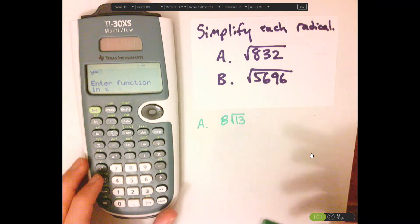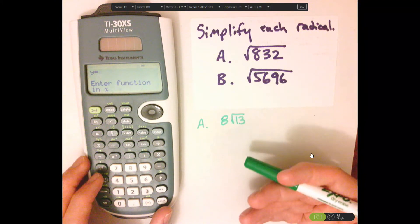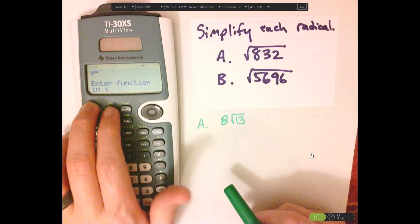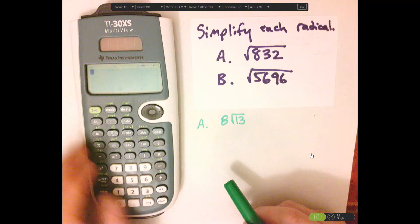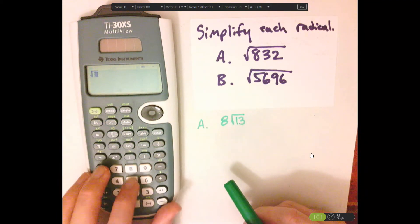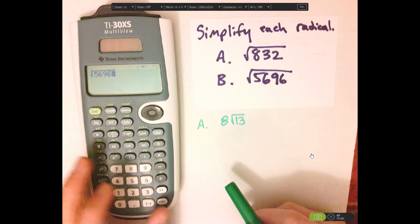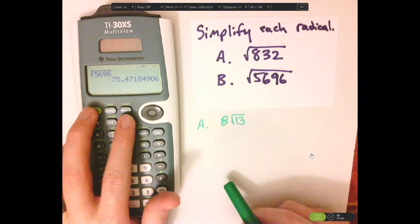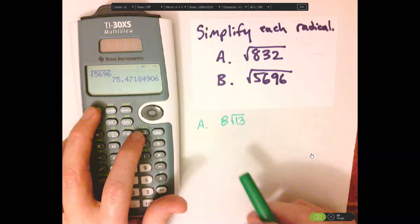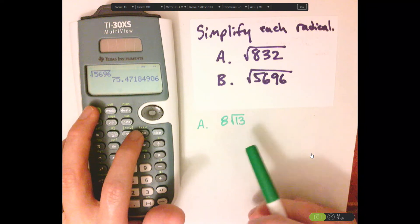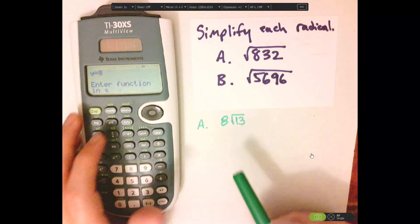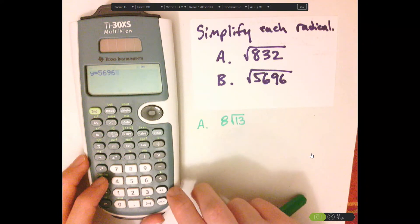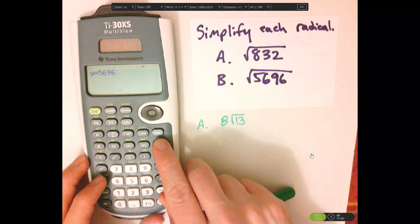When you're simplifying a radical, you want to see the largest perfect square that goes into that number. Let me go back real quick and do the square root of 5,696 to get a starting point of what to check up to — about 75. So let's use the table feature. I'm going to type in 5,696 and look for the largest square that goes into it.